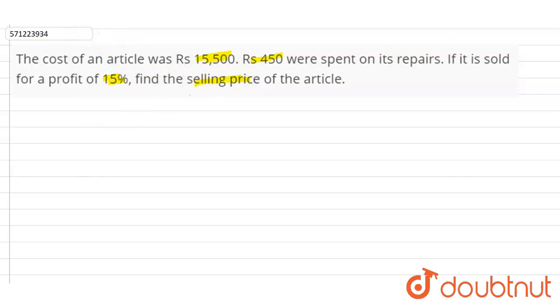In the question, it is given that cost price is 15,500, repairs cost is 450, profit is 15%, and selling price we have to find. So cost price plus repairs is the total price. Cost price is 15,500 plus repairs cost is 450, so cost plus repairs equals 15,950 rupees.